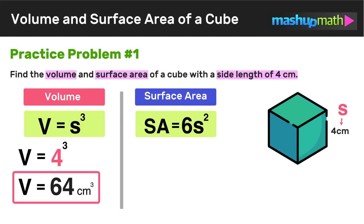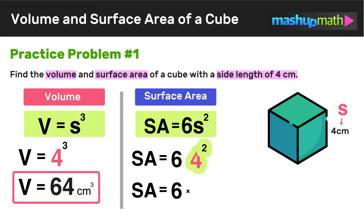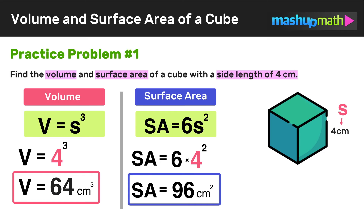Next we find the surface area using the formula: surface area equals 6 times s squared, where s equals 4. So instead of 6 times s squared, we have 6 times 4 squared. We know that 4 squared equals 16, so the surface area equals 6 times 16, which equals 96. So the surface area of this cube is 96 centimeters squared.